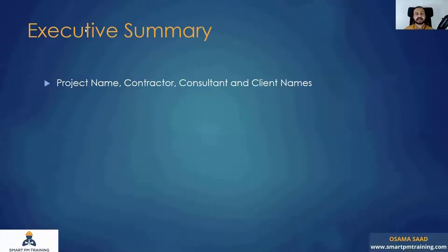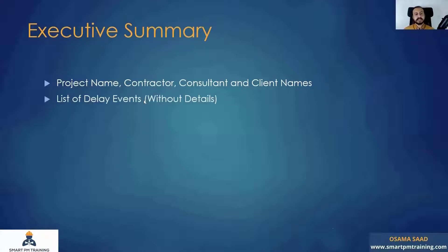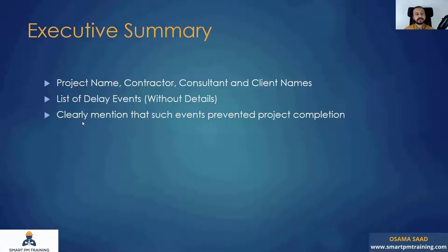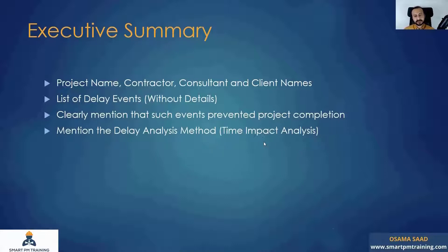In the executive summary, write the claim for anyone, even if they have no prior knowledge or familiarity with the project. Include the project name, contractor, consultant, and client names — even though we all know them. Provide a list of delay events without full details, since those are covered later in the claim. Clearly mention that such events prevented project completion. State the delay analysis method used — for example, Time Impact Analysis — and explain why you used it.